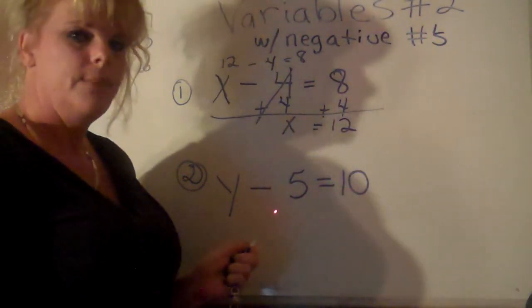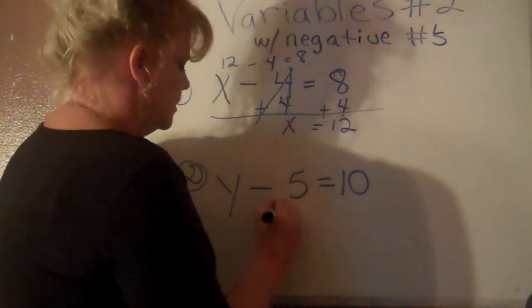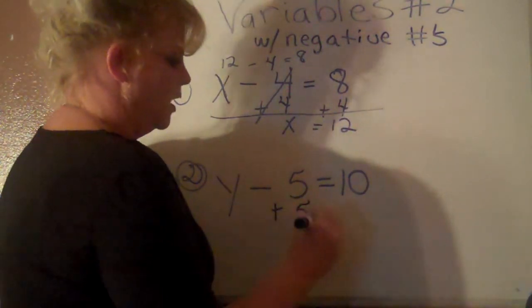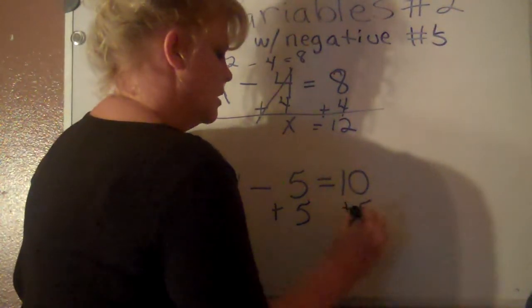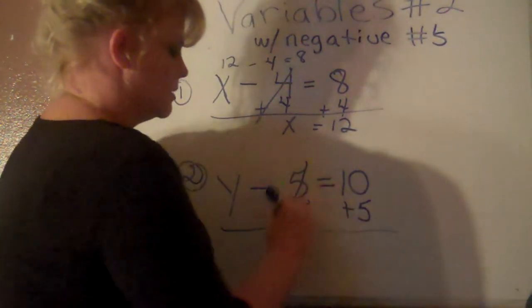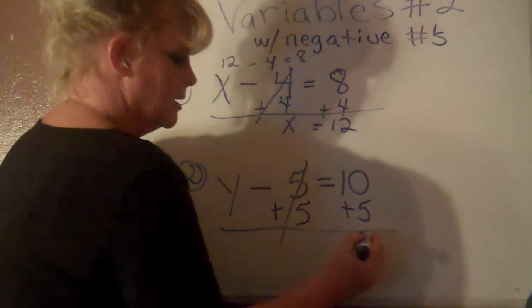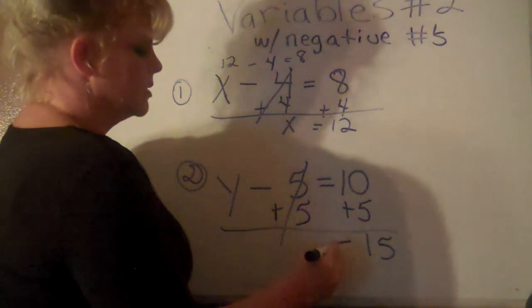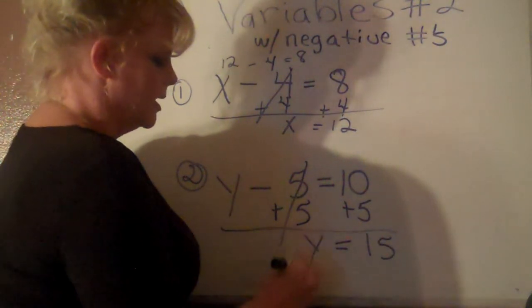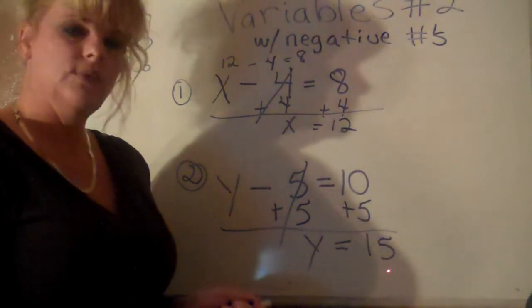So we're going to do the opposite, which is addition. We're going to put a plus 5. What we do to one side, we do to the other. We know that this cancels out, and we have to add this. 10 plus 5 is 15. Bring down the equal sign and bring down the y. It says y equals 15.